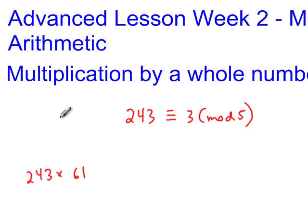Well, 243 times 61 is a large number, and it's going to require us to do lots of multiplication and division. However, what we can do is we can show that 243 times 61 is equivalent to 3 times 61 mod 5. So if we multiply 61 on the left of a congruence, we can also multiply it on the right.